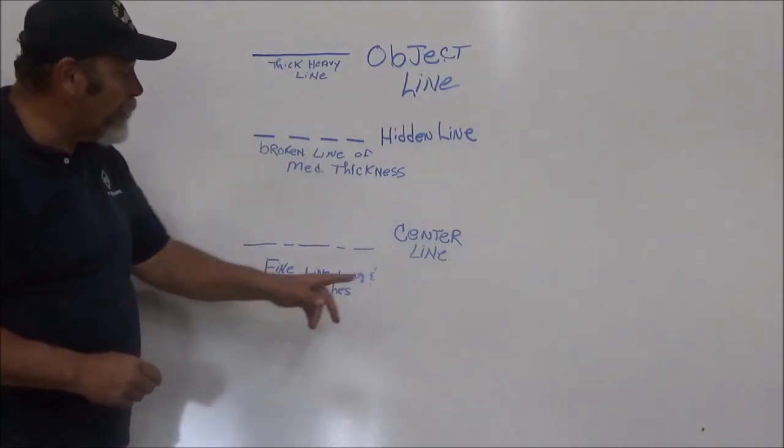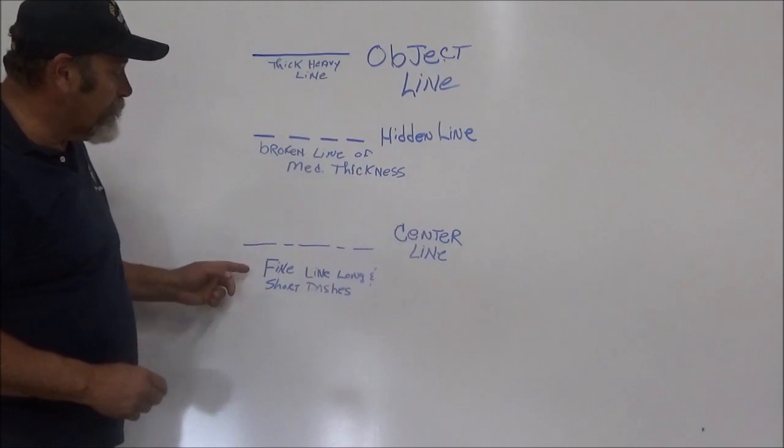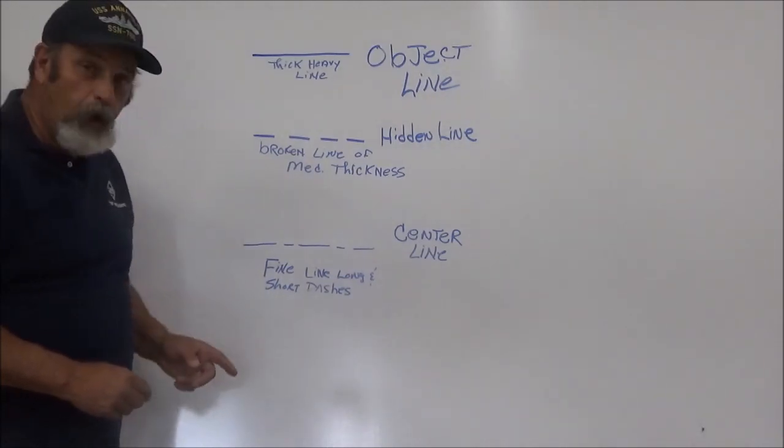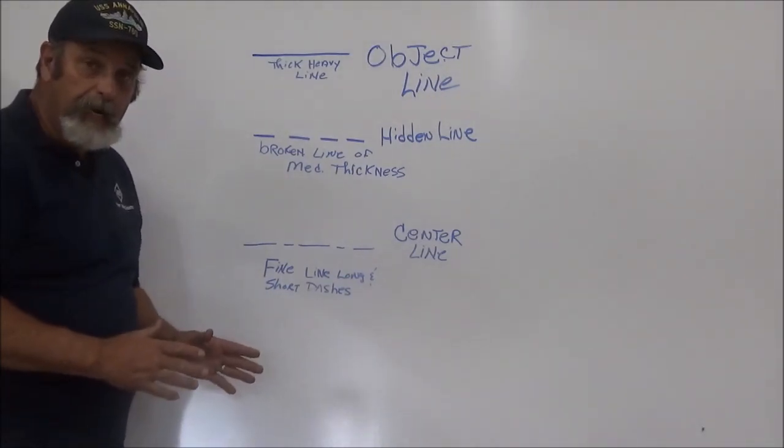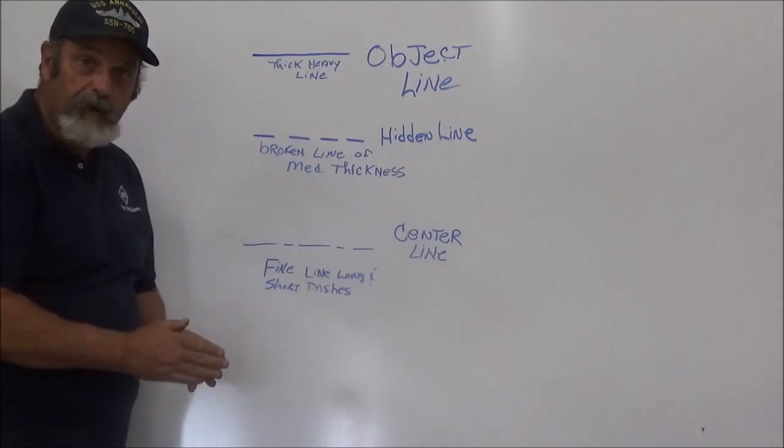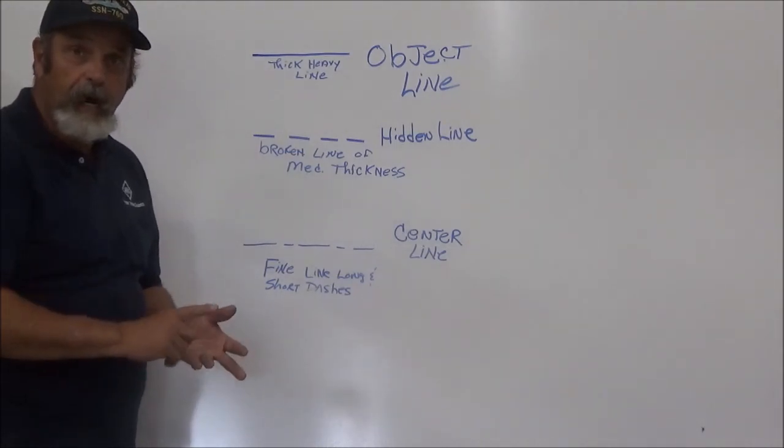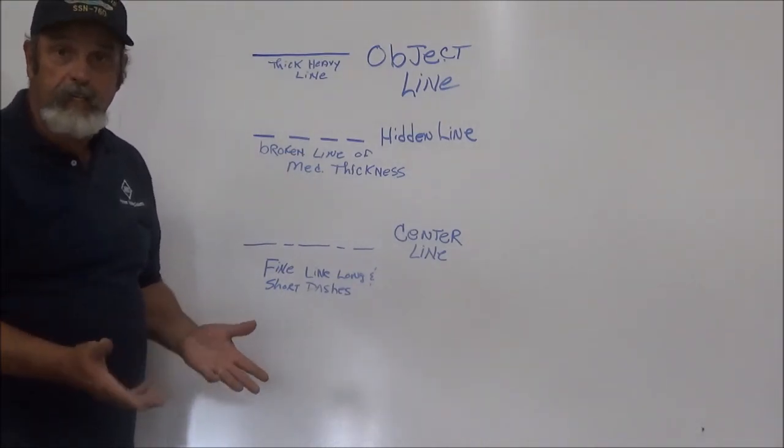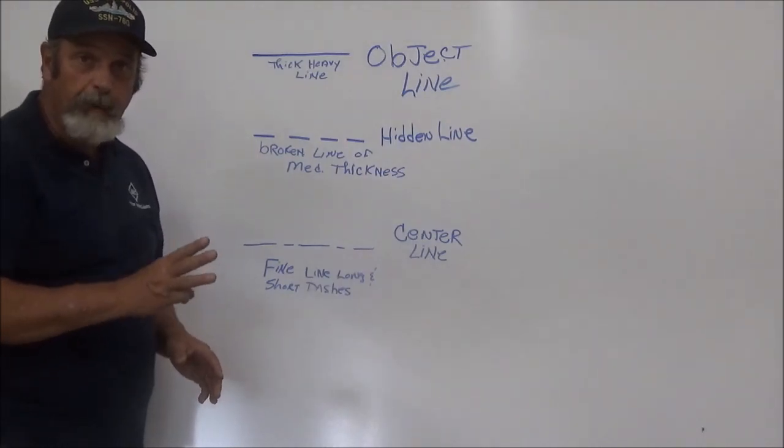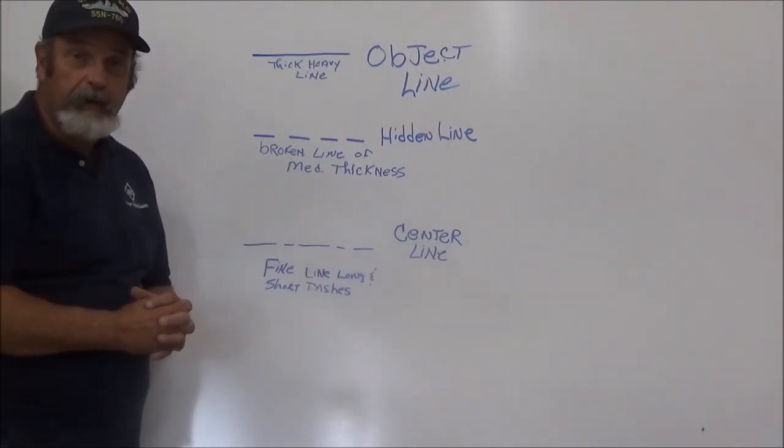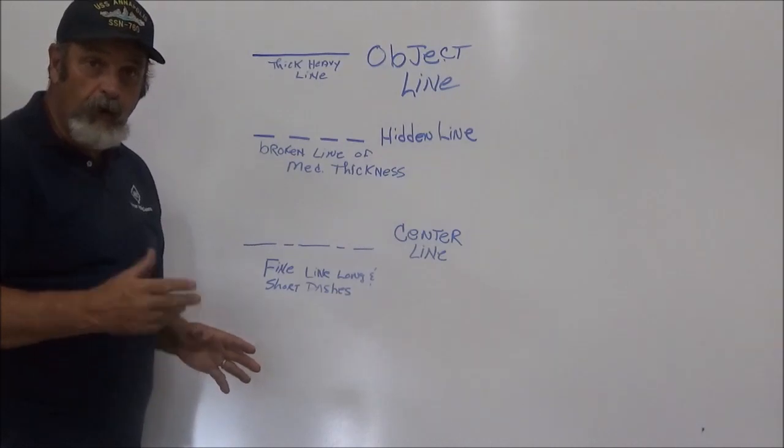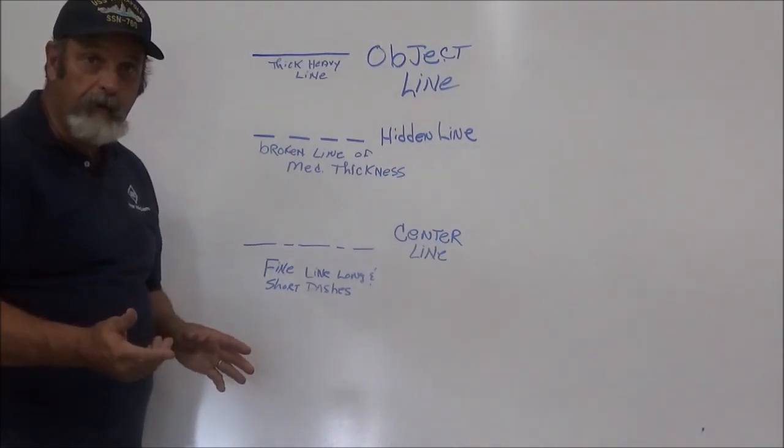And the last one is called the center line, which is a fine line of long and short dashes. This is going to help show you the center of an object, be it a tank, a hole, or where something is to be located. So those are the three basic lines that we're going to have to understand to continue on with our blueprint reading for metal fabricators.